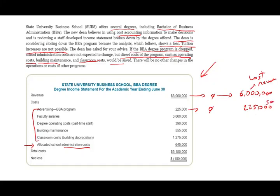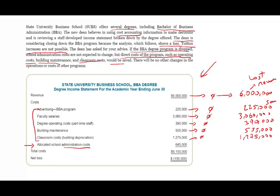Here we save on expenses by removing them. Faculty salaries are not needed because they are part of operating the program, so they are differential. Degree operating costs for part-time people — we let them go, so that is also a differential cost and a savings. Building maintenance, again part of operating the program, goes away. Depreciation follows the same concept — although depreciation is not a cash flow, we are strictly following what we are told. Allocated school administration costs will not change because those are allocated.